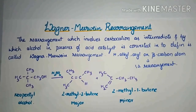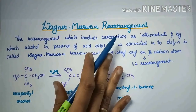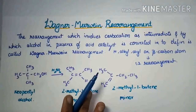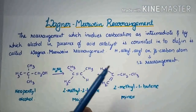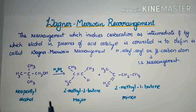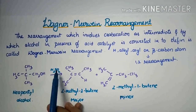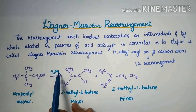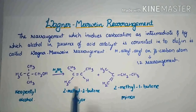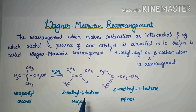Hi everyone, today I am explaining Wagner-Meerwein rearrangement. It is the rearrangement which involves a carbocation as intermediate, by which the alcohol in the presence of an acid catalyst is converted to an olefin. It is called Wagner-Meerwein rearrangement.